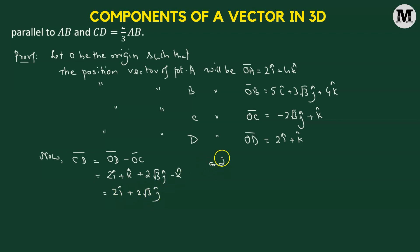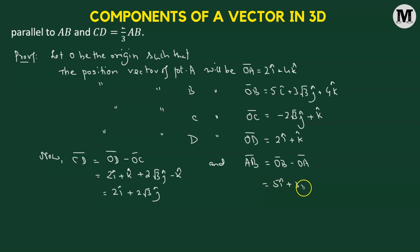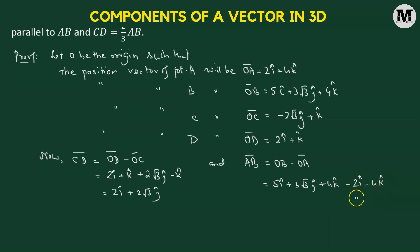Next, we compute the value of AB vector. AB vector equals OB vector minus OA vector. OB is 5i cap plus 3 times square root of 3 j cap plus 4k cap, and subtracting OA gives negative 2i cap minus 4k cap. That gives us 3i cap plus 3 times square root of 3 j cap, with the 4k cap terms cancelling out.